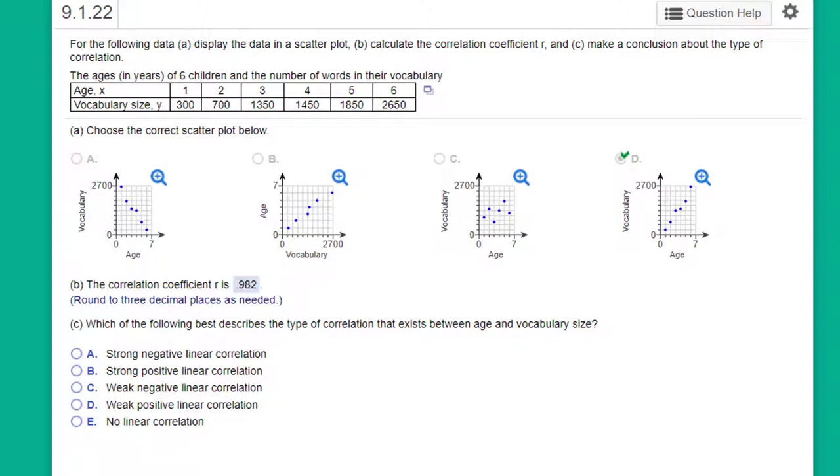Now there is a tool in StatCrunch to give you the correlation coefficient r, but for a problem like this there's a faster way to do it. Let's open up the data in StatCrunch.